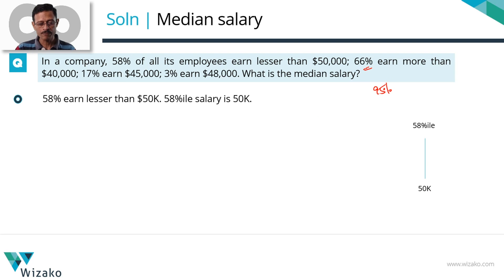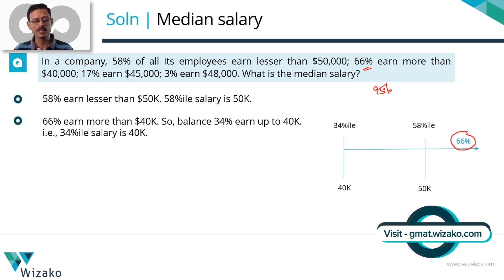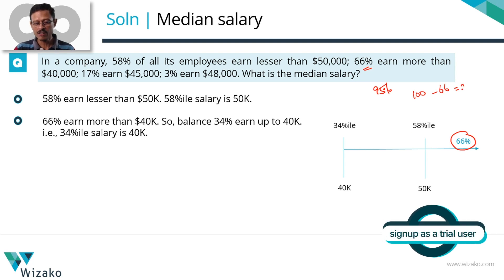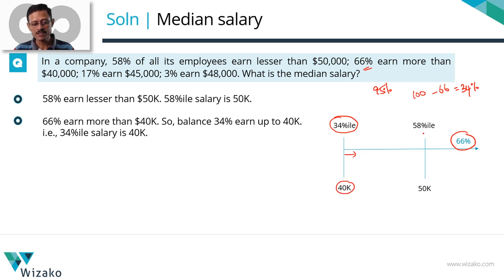Let's move on to the second data point. 66% earn more than $40,000. Let's plot $40,000 to the left of $50,000. What percentage of the employees are earning more than $40,000? 66%. Of the 100%, we know what these 66% are doing, so we are left with another 34% of the employees. If 66% are earning more than $40,000, then up to $40,000 we'll have the remaining 34%. Essentially, the 34th percentile salary is $40,000.